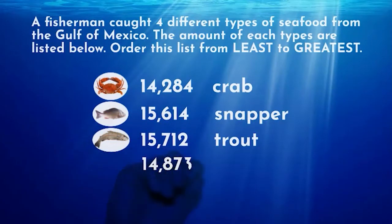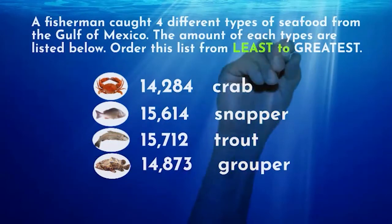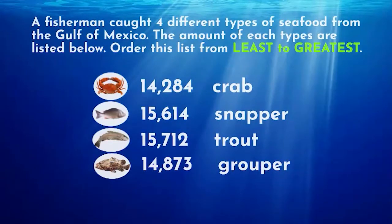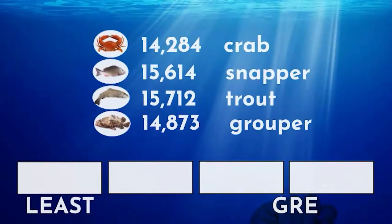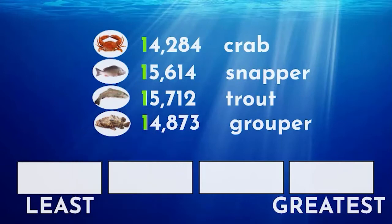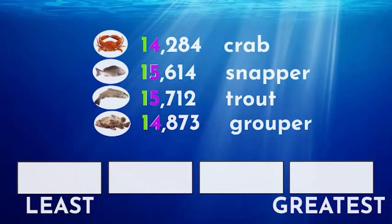...catch with the least amount. We always start with the digits with the highest value when comparing numbers. Notice all of these numbers have a one in the ten thousands place — they all have an equal amount of ten thousands. This means we need to look at the next digit, in the thousands place, for each number. Can you see...